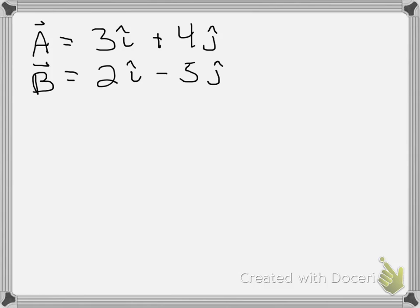We have the vector A is equal to 3i plus 4j. The vector B is equal to 2i minus 5j. And what we're interested in, first of all, is the cross product A cross B.